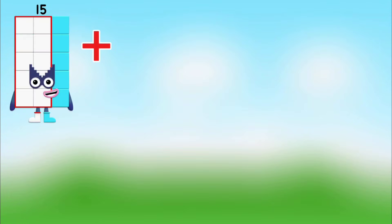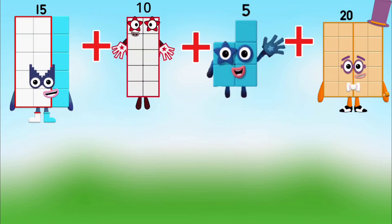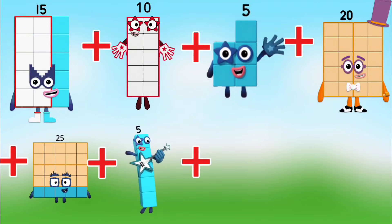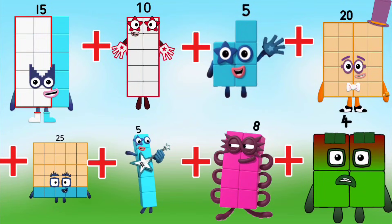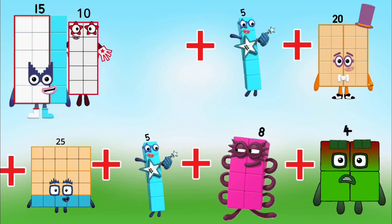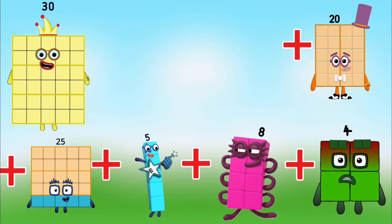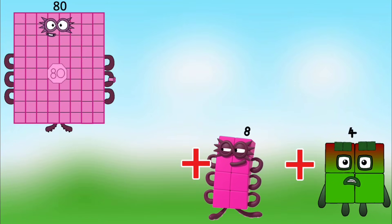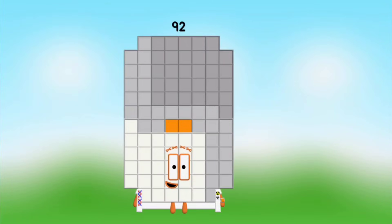15 plus 10 plus 5 plus 20 plus 25 plus 5 plus 8 plus 4 is equal to 92. Let's add one by one. 15 plus 10 is 25, plus 5 is 30, plus 20 is 50, plus 25 is 75, plus 5 is 80, plus 8 is 88, plus 4 is 92.